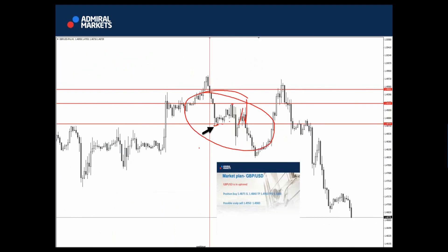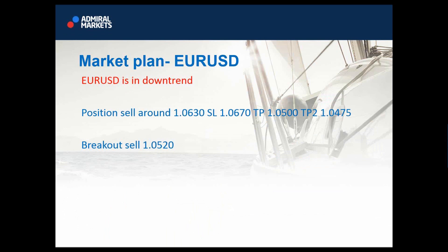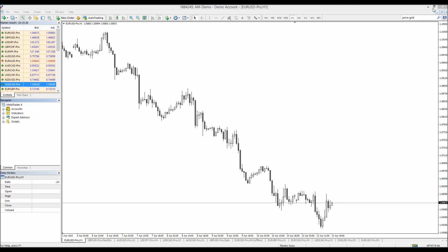Now let's see today's setups and the next few days. I think we can sell Euro again at 1.0630 with a 40-pip stop loss towards 1.0500. If today's low is broken, this will be another breakout sell towards 0.00475, if that level breaks. This is now major support and we are aiming to break the support. This is how EUR/USD looks — I will show you the chart now.